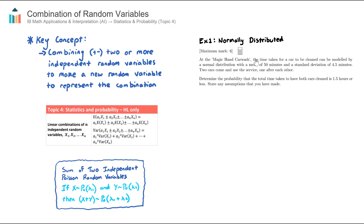Before we get into those, let's talk about the formulas given to us in the formula booklet. There are two formulas involving the combinations of n independent random variables. The first is for finding the expected value or mean of the combination, and the second is for finding the variance of the combination. I also have another property — not in the formula booklet but useful to remember — for combining two random variables that follow a Poisson distribution: it simply involves adding the two lambdas together. I'll discuss that further in the second example.